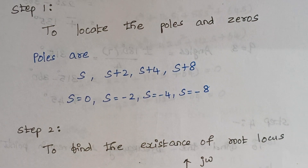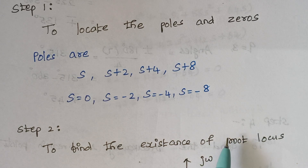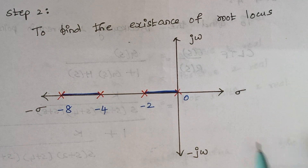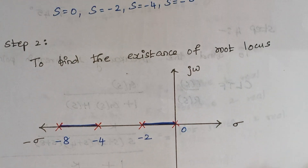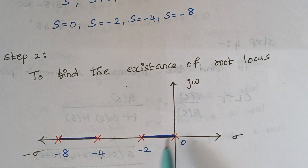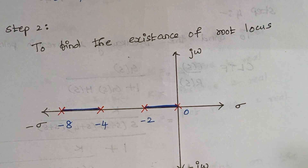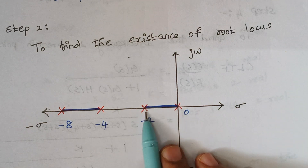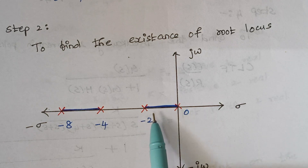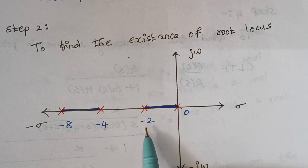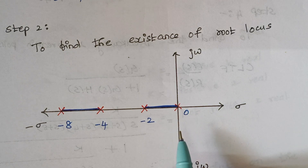The next step is to find the existence of root locus. We draw the s-plane and mark the poles. This is our typical s-plane — the real axis and the imaginary axis. The pole values are 0, -2, -4, and -8. After marking the poles, we choose a test point. Here I am taking -2 as a test point. To the right-hand side of -2, there is only one pole. Since 1 is an odd number, root locus exists between 0 and -2.